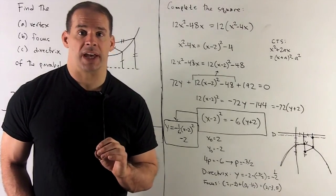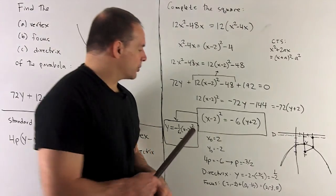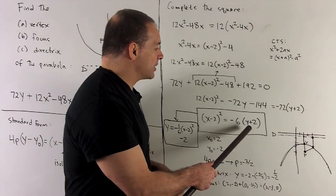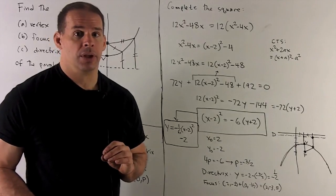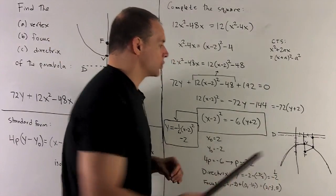First, we want the vertex. So that's just (X₀, Y₀). X - X₀ says X₀ is equal to 2. I think of this as Y - (-2), it says Y₀ is equal to -2. So our vertex is (2, -2), we put that on the XY plane.